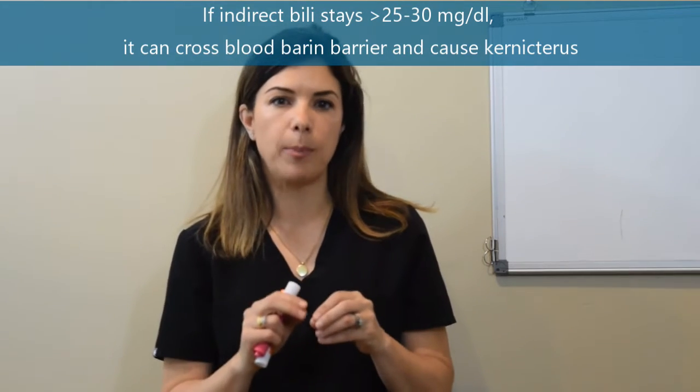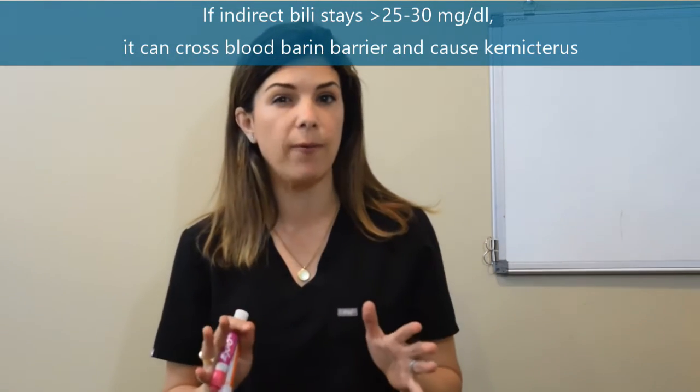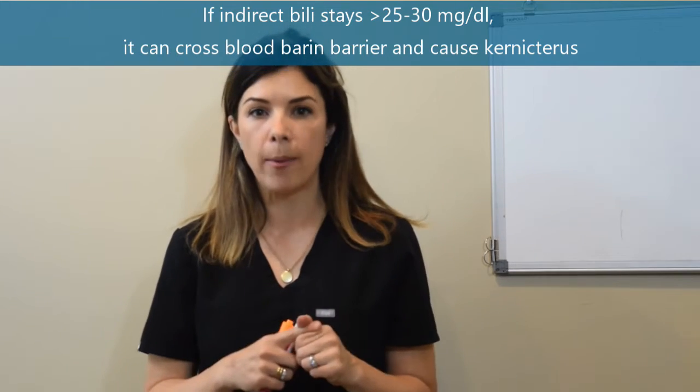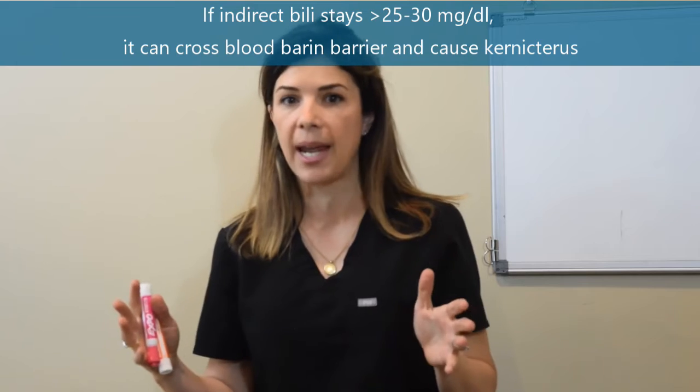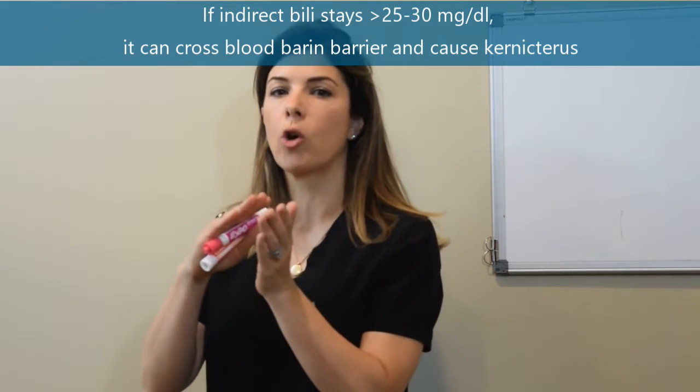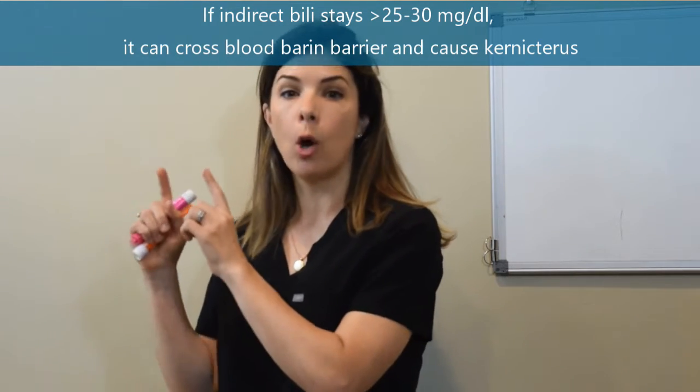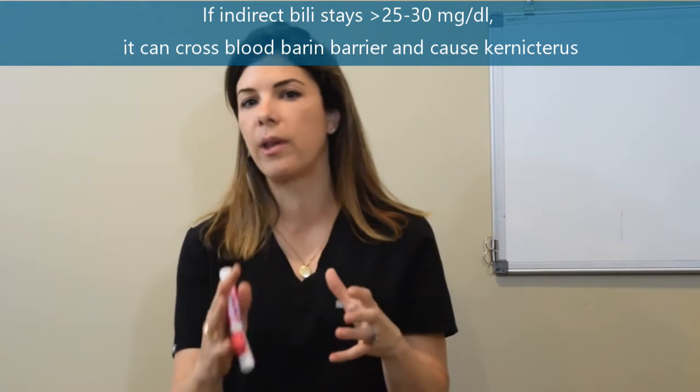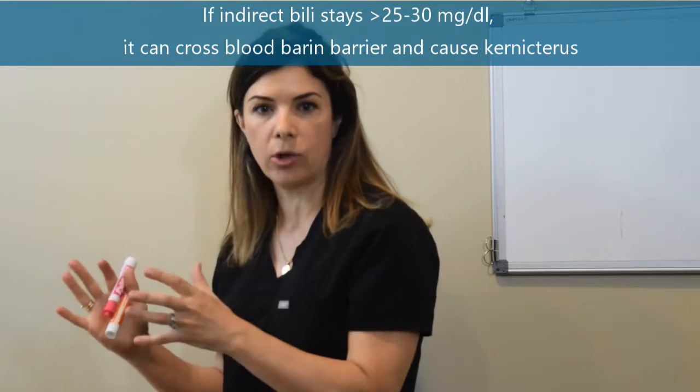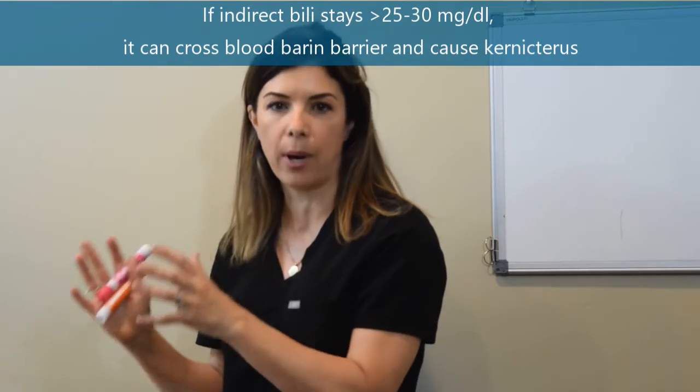If the indirect bilirubin is above about 25 or 30 milligrams per deciliter and stays that high for several hours or several days then that bilirubin will cross the blood-brain barrier go into the brain and normally settle in the basal ganglia or the cerebellum and cause kernicterus, causing bad brain damage.